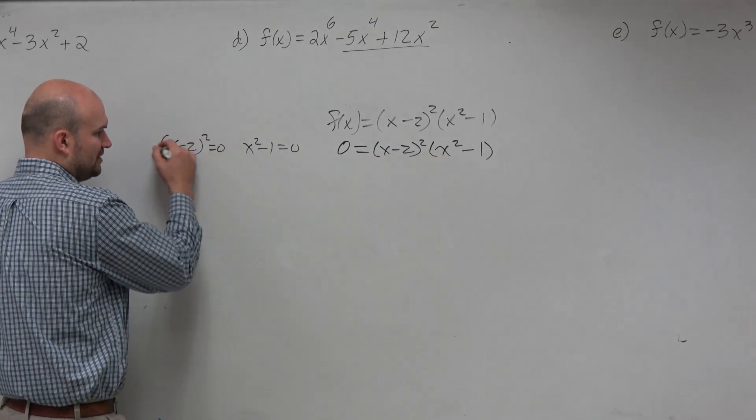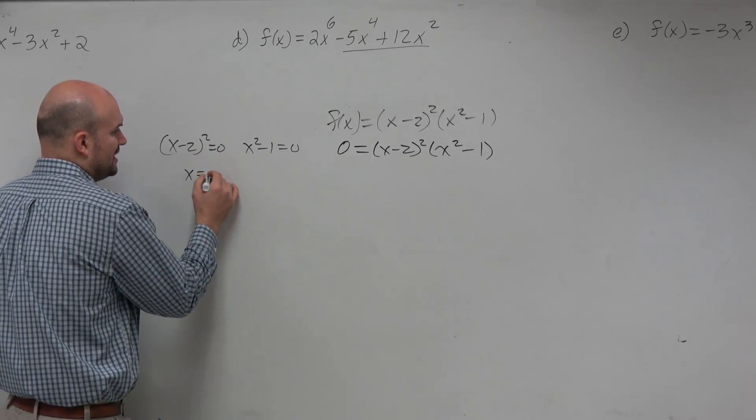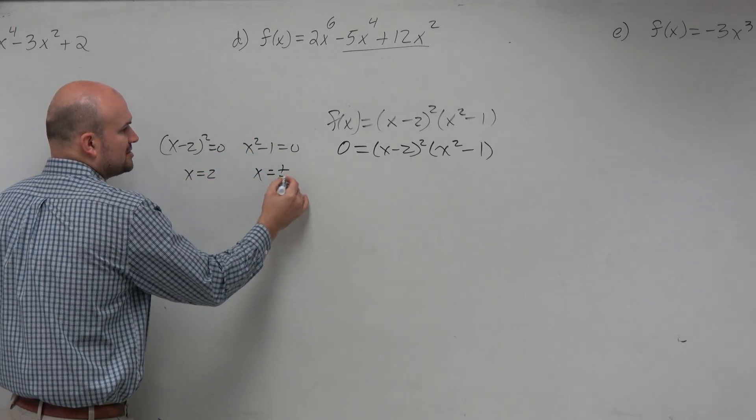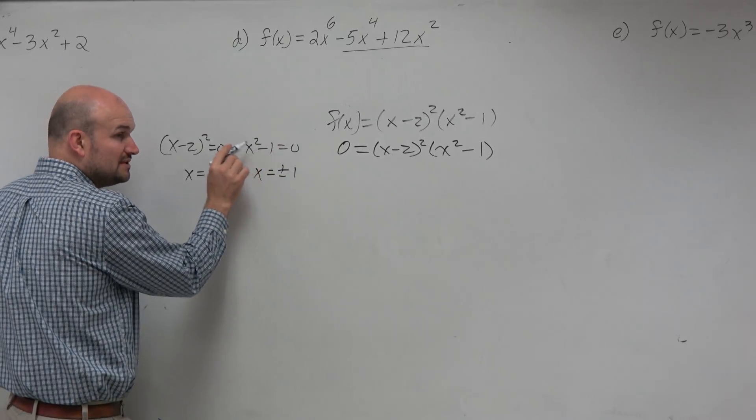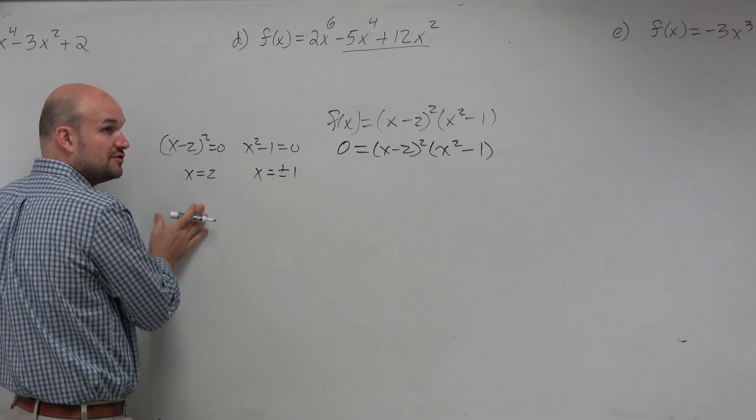So when you solve, hopefully you guys take the square root of both sides, add the 2, you get x equals 2. Add 1, take the square root, you get plus or minus 1. You have to include that plus or minus. So therefore, we know there's actually three zeros here.